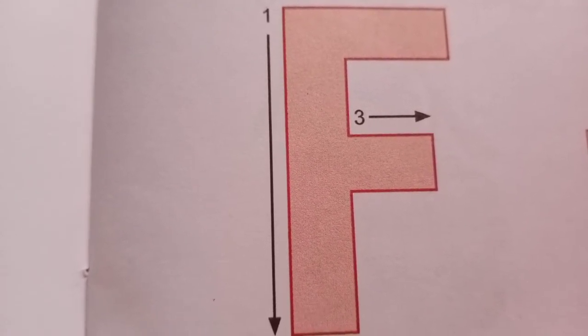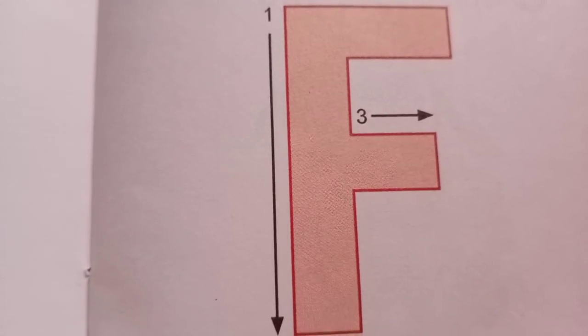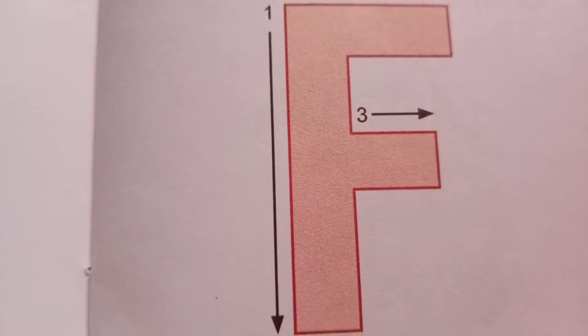Aaj ham letter F likhna sikhenge. Thikhe? First, a standing line. Then, a big sleeping line. Then, a small sleeping line makes F.